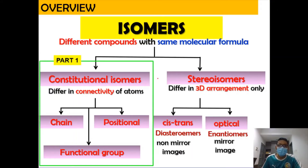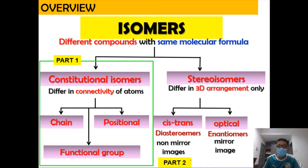Isomers are divided into two types: constitutional isomers and stereoisomers. Constitutional isomers include chain, positional, and functional group isomers, which we covered in Part 1. In this video, we focus on cis-trans isomers. Optical isomers will be covered in Part 3, the next video, so stay tuned.